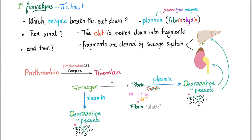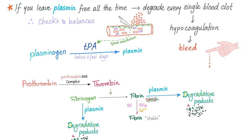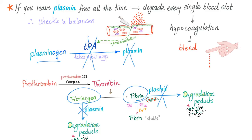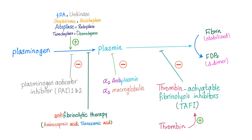In fibrinolysis, we have plasmin that destroys the fibrinogen, the fibrin, and the stabilized fibrin — producing fibrinogen degradation products, fibrin degradation products, and D-dimer respectively. Plasmin is not free all the time; it comes from plasminogen. TPA converts plasminogen into plasmin. Here's the whole story: plasminogen converts into plasmin, then plasmin dissolves the fibrin into fibrin degradation products, and the stabilized fibrin into D-dimer. This process is called fibrinolysis.